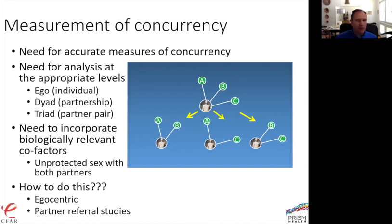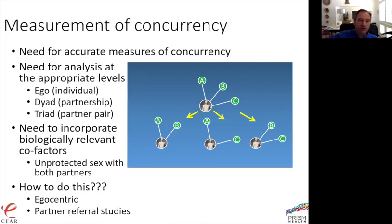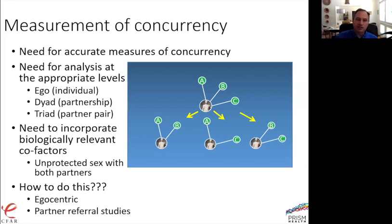One way to measure this is egocentric: ask Joe about his partners, ask Joe what he knows about his partners' partners, and construct network depictions from Joe's responses. The other is to ask Joe to refer us to his partners, then ask those partners about their behaviors, and put all the information together.